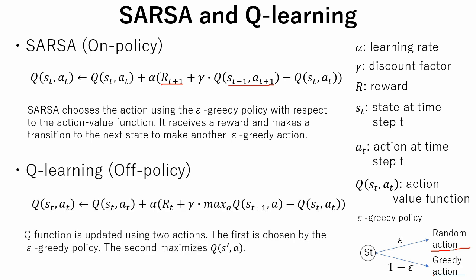Here is an equation of Q-learning. The Q-function is updated using two actions. The first is chosen by the epsilon greedy policy. The second action maximizes the action value function.